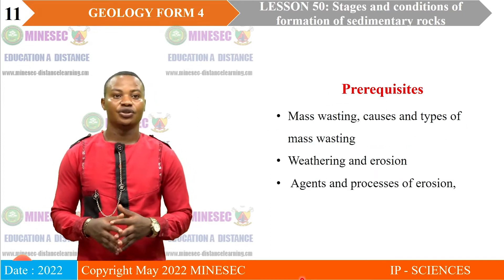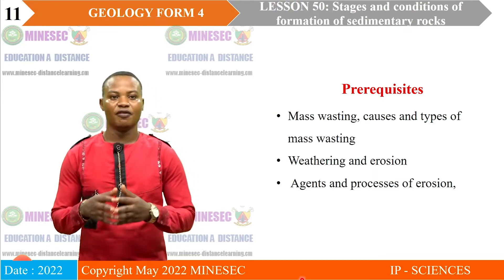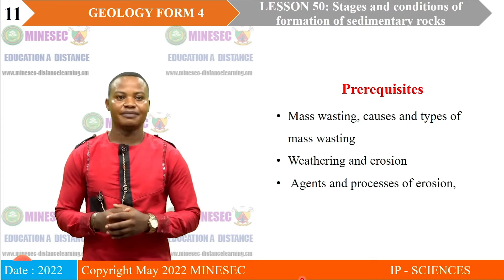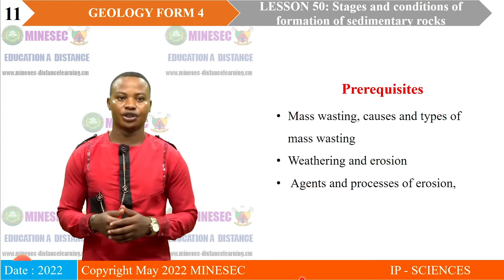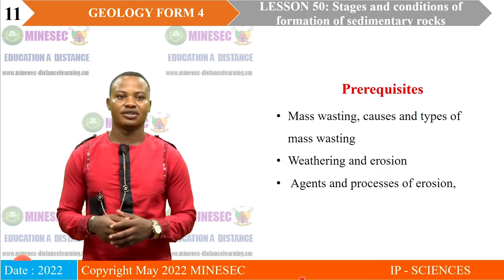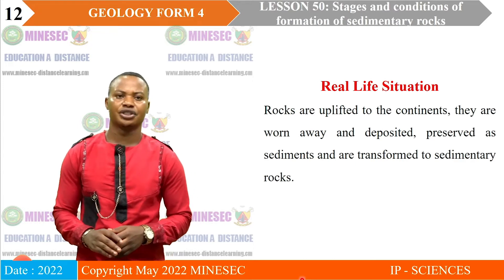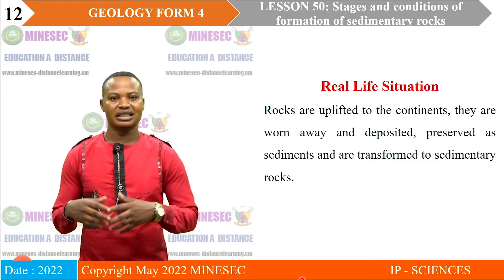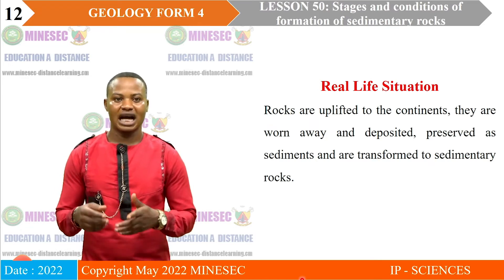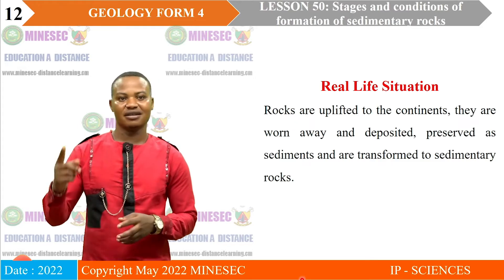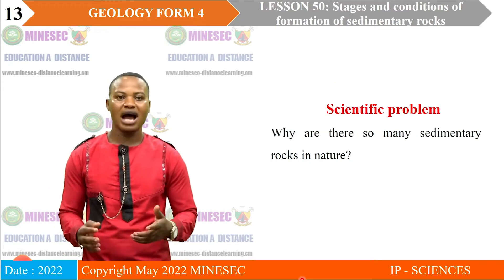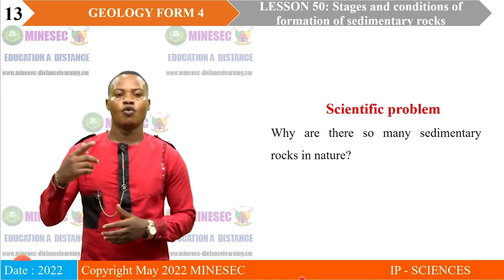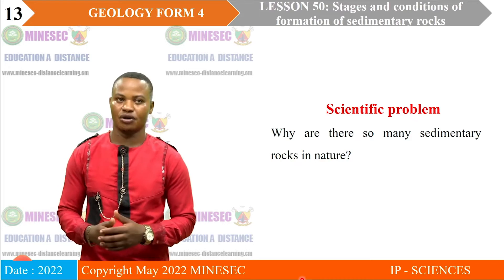For previous knowledge, you need knowledge from mass wasting — the movement of materials downslope under the influence of gravity — including its causes and types, as well as knowledge from weathering, erosion, and agents and processes of erosion. For the real-life situation: rocks are uplifted to the continent, weathered, eroded, transported, and deposited in sedimentary environments where they are later transformed to sedimentary rocks. The scientific question is: why are there so many sedimentary rocks if there is only a single cycle?